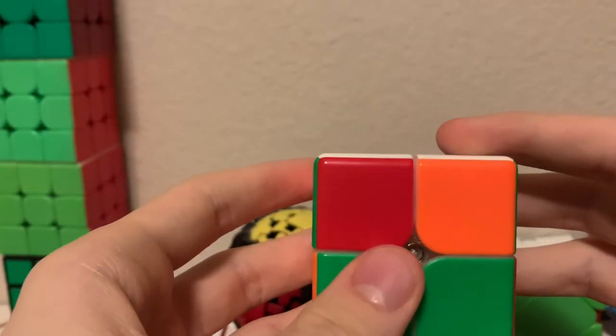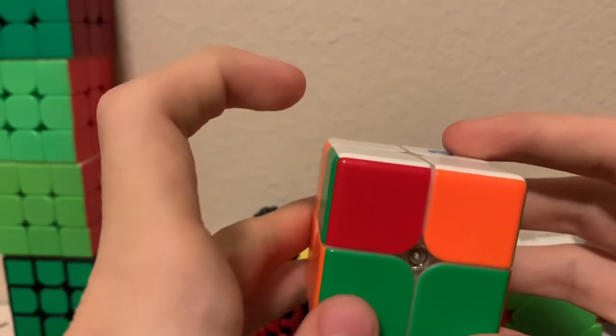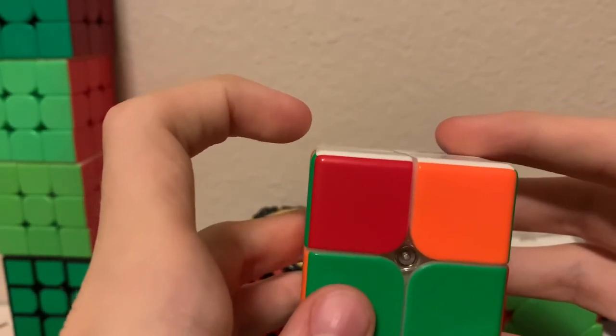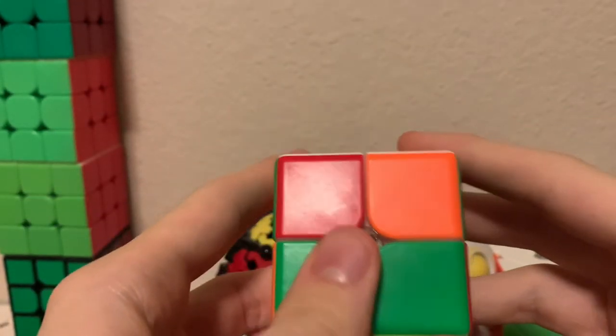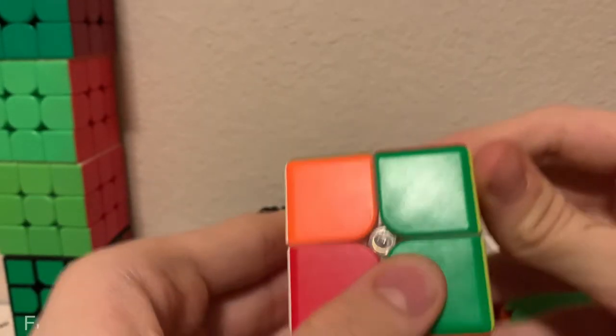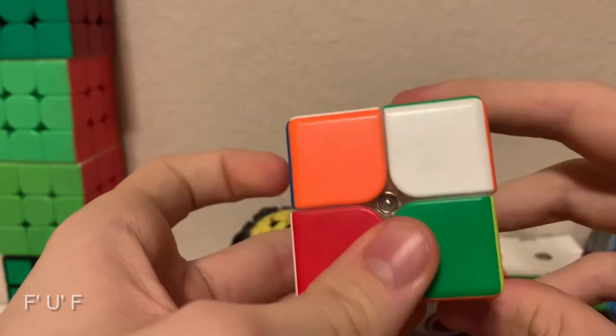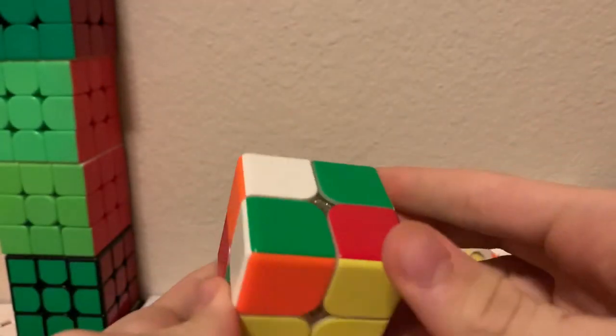Now that you know which corners to switch, all you need to do is put the two corners that you need to switch in the top front left and the top front right, and you can switch it with the algorithm F' U' F. And now the entire cube is 2gen.